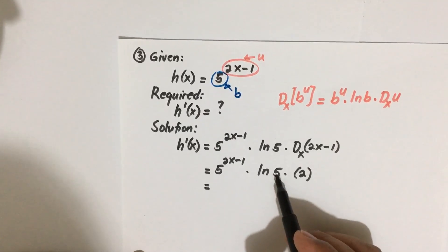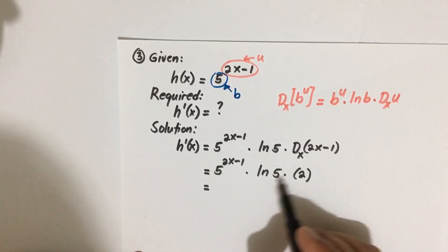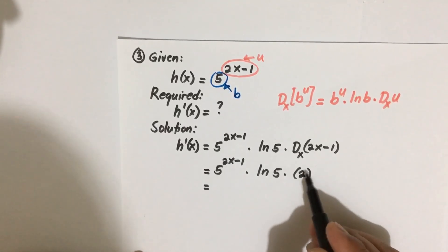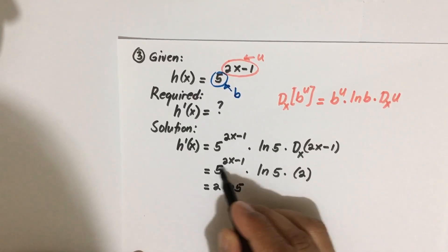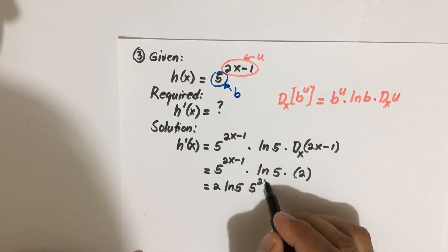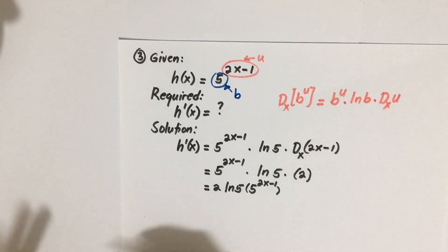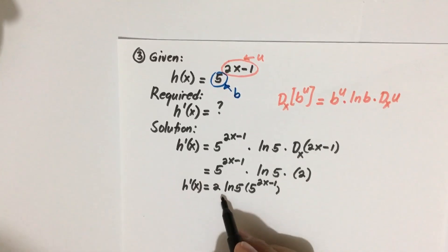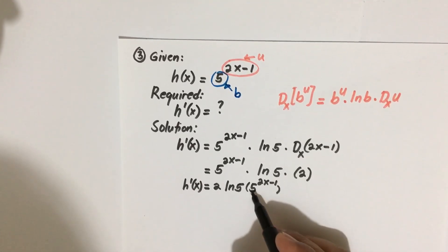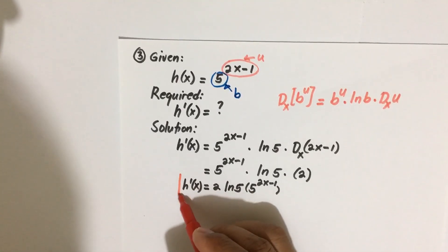Be careful — you cannot literally multiply 5 times 2, as that would be a wrong move. To avoid that mistake, it is better to write the constant first. So we have 2 times ln 5 times 5 to the power 2x minus 1. Therefore, h'(x) is equal to 2 times ln 5 times 5 to the power 2x minus 1. This is our answer for example number 3.